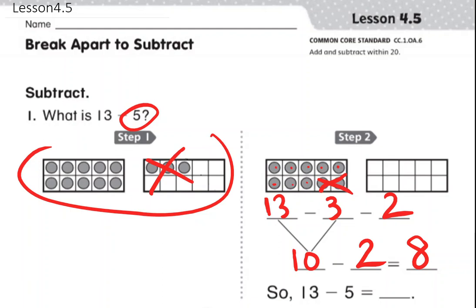So the answer to 10 minus 2 equals 8. We go back to the question: What is 13 minus 5? 13 minus 5 is 8. And that's how you break apart to subtract.